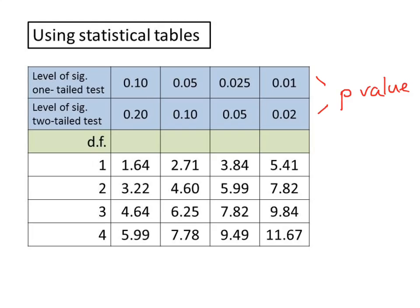Chi-squared requires the degrees of freedom to be calculated. This is linked to the number of variables and is calculated by taking the number of rows minus 1 and the columns minus 1 and multiplying these two values together.